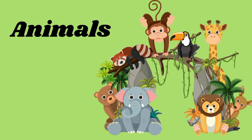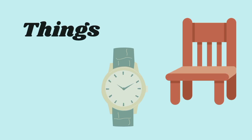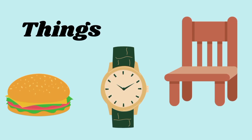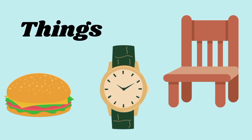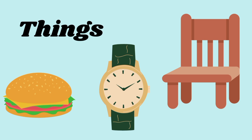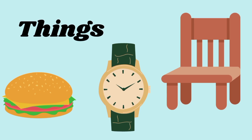Animals — all the animal names are nouns. Things like burger, watch, chair and many more.